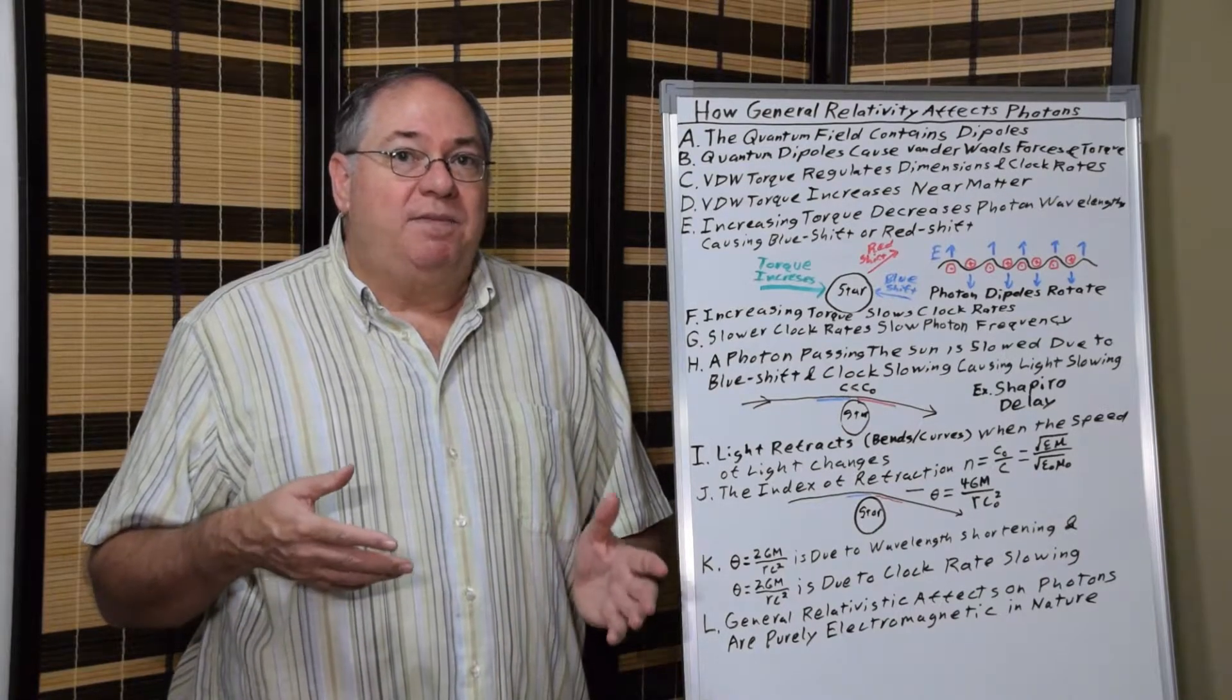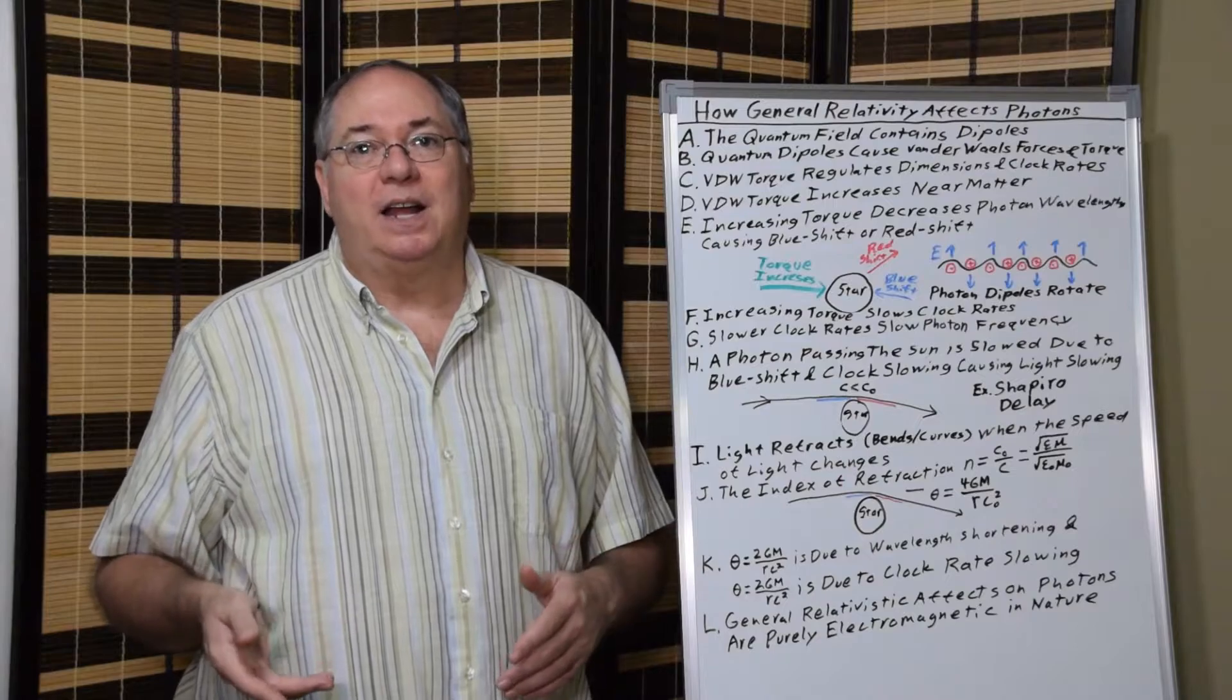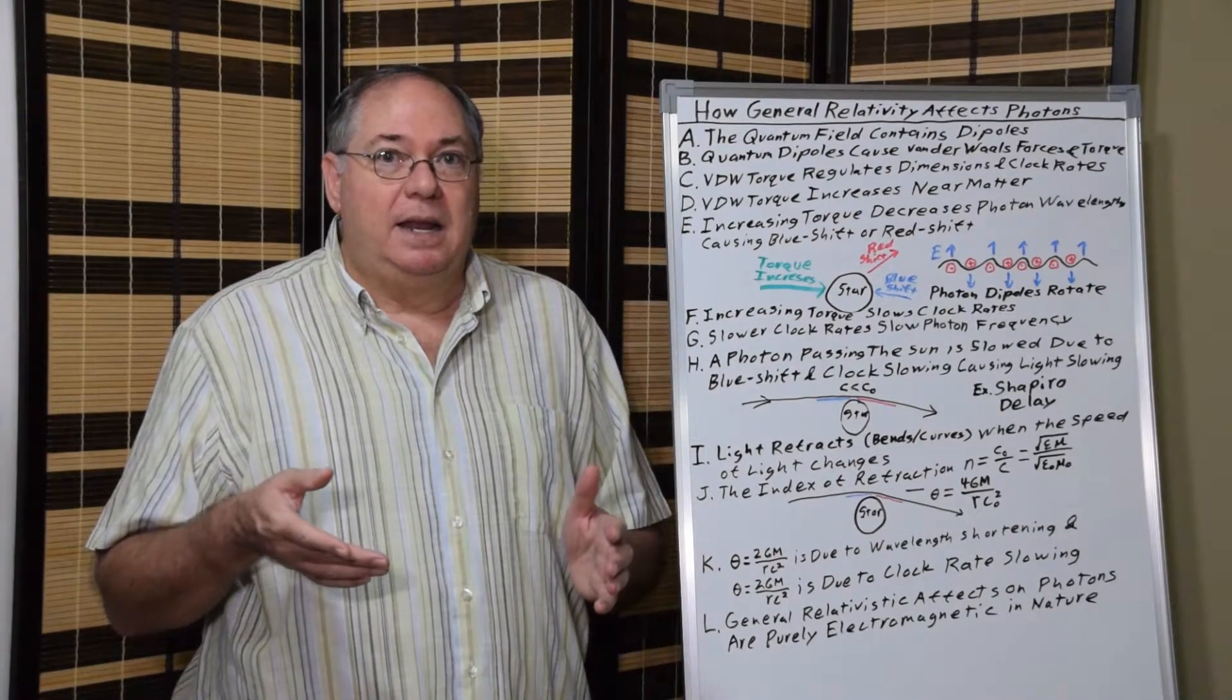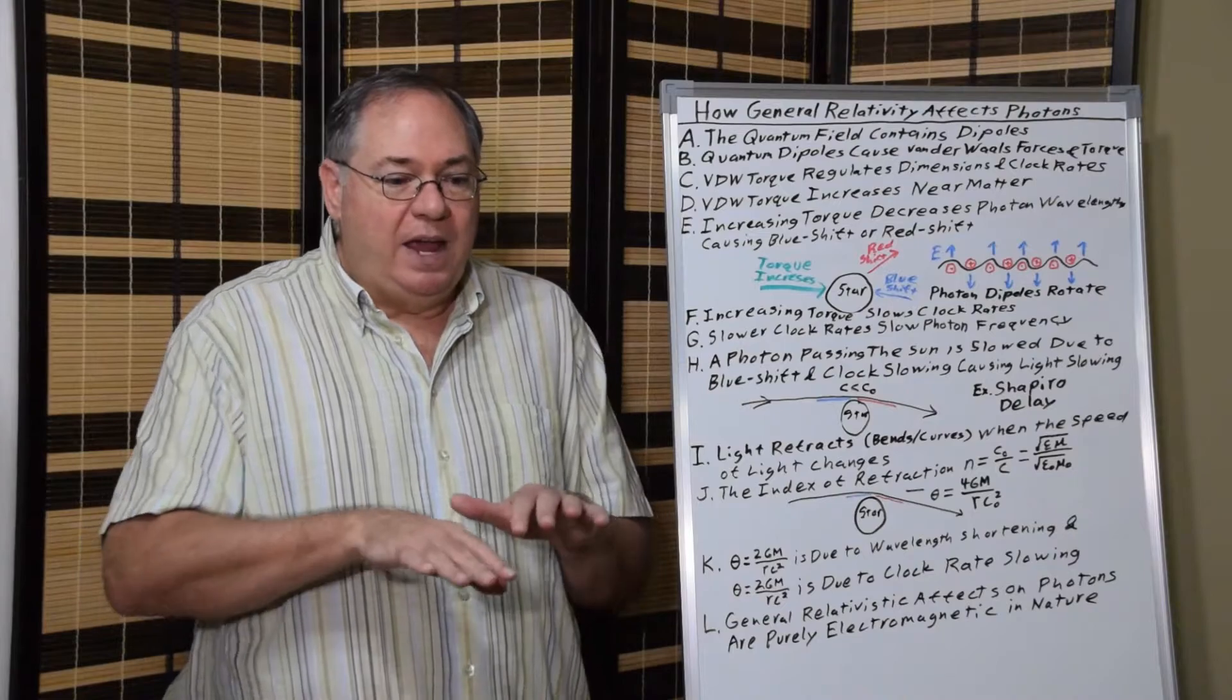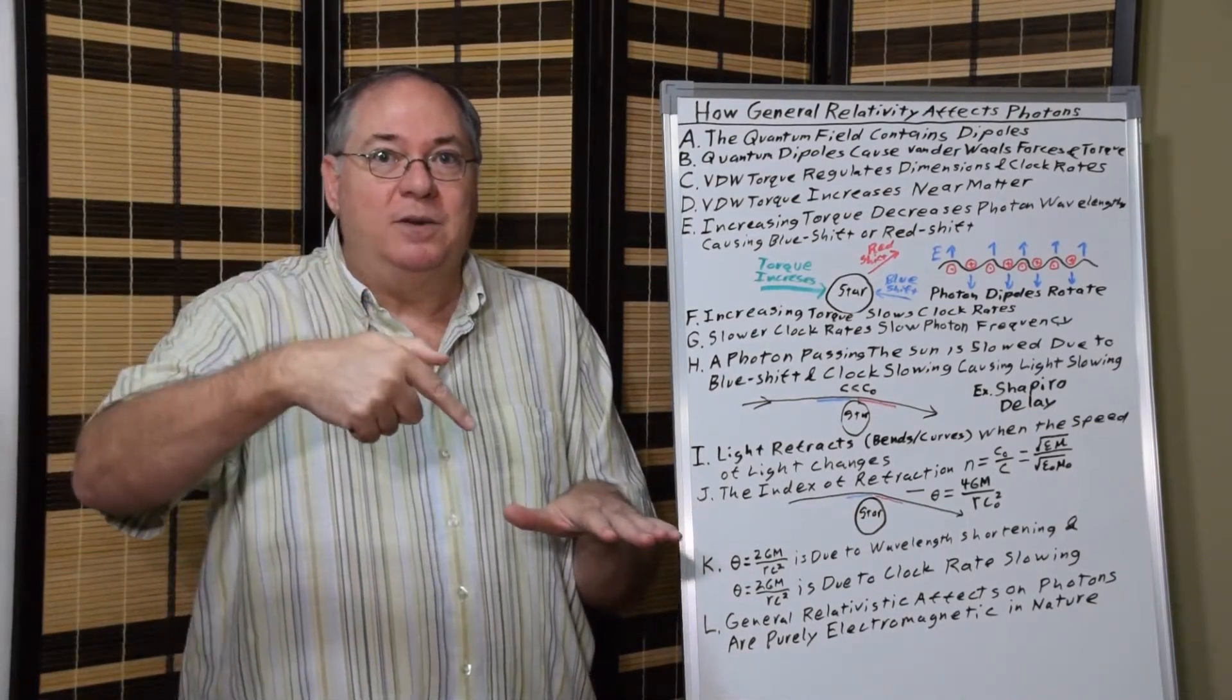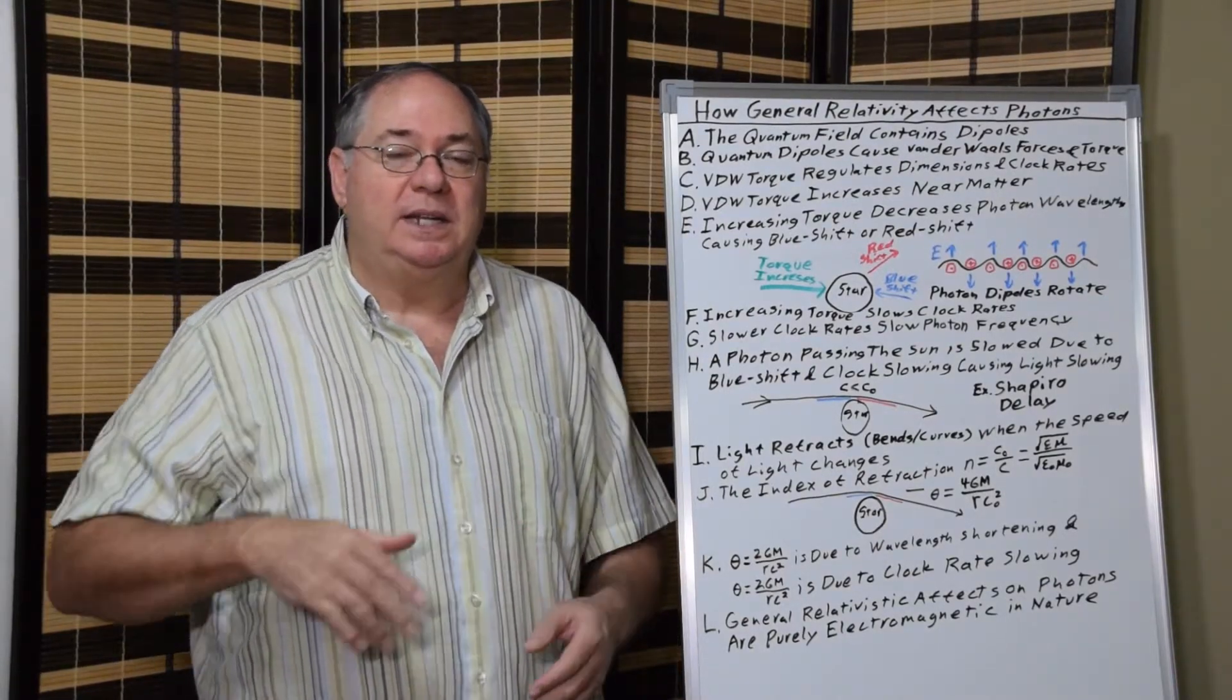Now the last effect is bending of light. In most basic optics, we have Snell's law that light bends when the speed of light changes. So if you have a piece of glass, for example, and light's coming in at an angle, it will bend because light slows inside the glass.